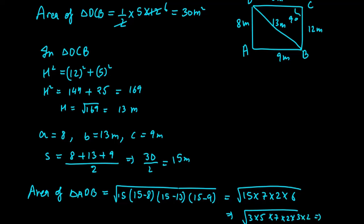We can make pairs of 3 and 2, while 7 and 5 will be left behind. So we can take out 3 and 2, leaving under root 35. This gives us 6 root 35 meter square. This is the area of triangle ADB.